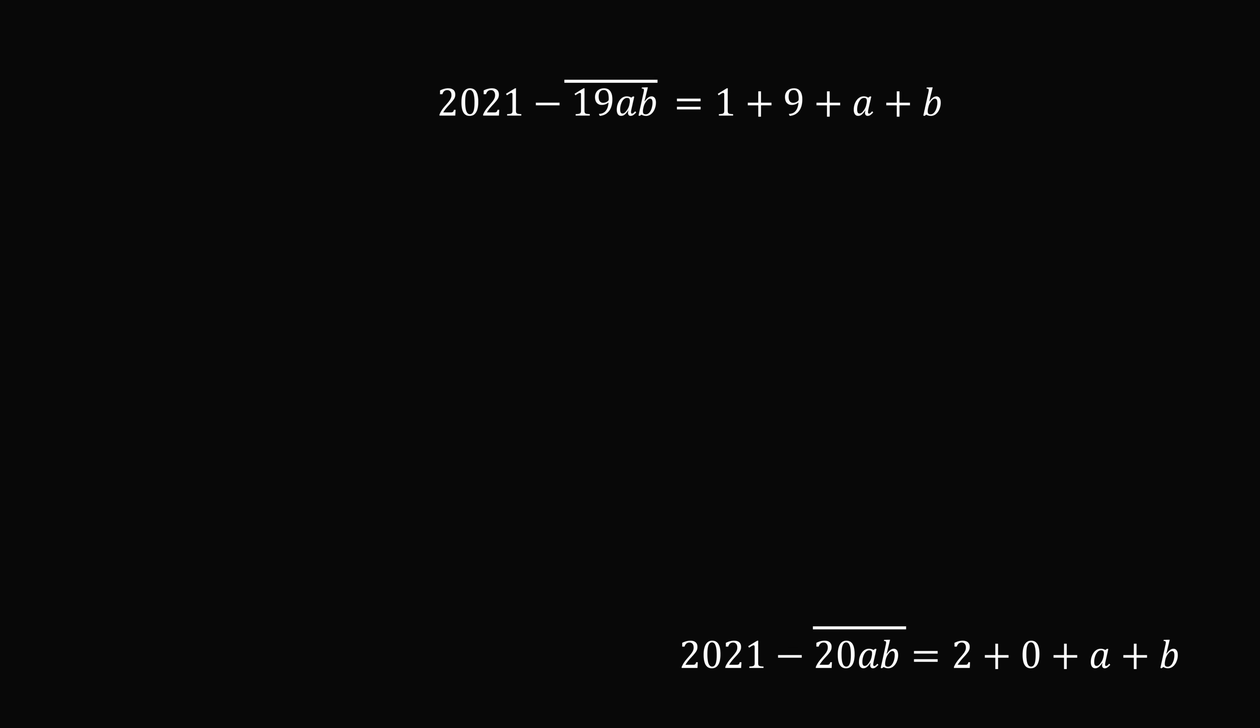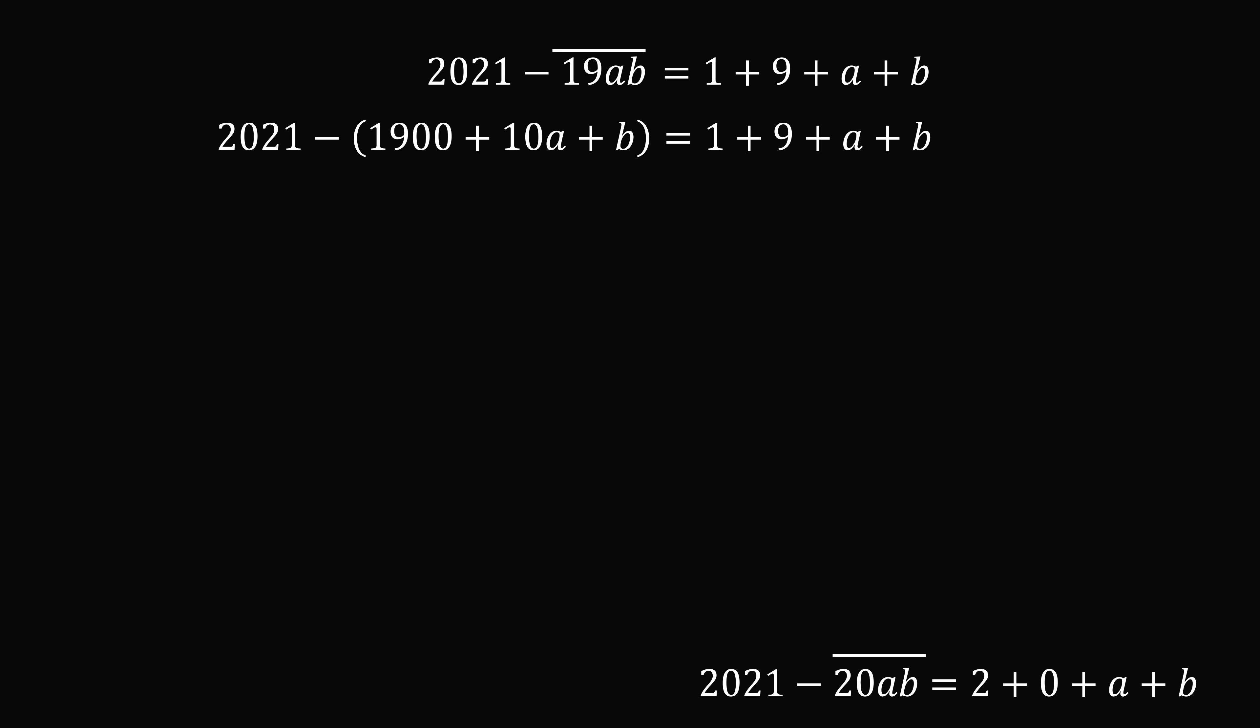Let's start if you were born in the 1900s. So, 19ab is equal to 1900 plus 10a plus b. So, we'll simplify the left-hand side. 2021 minus that is equal to 121 minus 10a minus b. On the right-hand side, 1 plus 9 plus a plus b is equal to 10 plus a plus b. We can now bring the constant terms to the left-hand side, and bring the variables to the right-hand side. So, we have 111 is equal to 11a plus 2b.